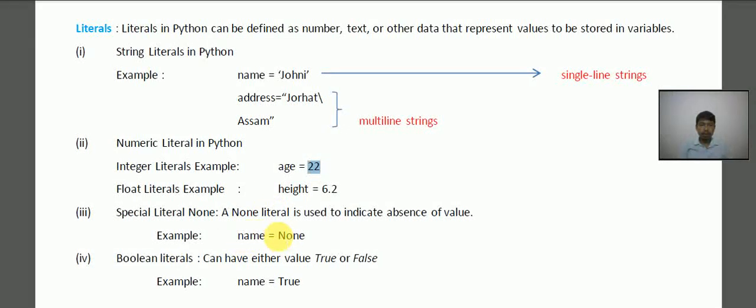So None means there is no value. So as you can see here, name = None means there is no value for name. But when we use the print command then the output will be None, the same as it is written. The next, Boolean literal can have either value True or False.